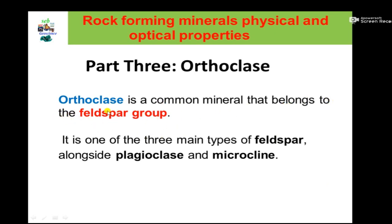Orthoclase is a common mineral belonging to the feldspar group. The feldspar group has three members: orthoclase, sanidine, and microcline. Orthoclase is also known as K-feldspar. It is one of the three main types of the K-feldspar group, which includes sanidine, microcline, and orthoclase.